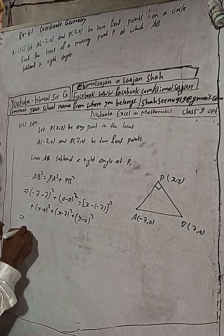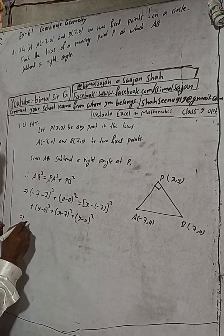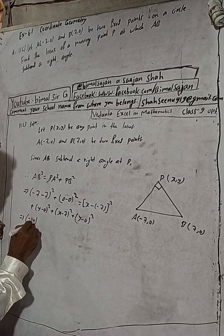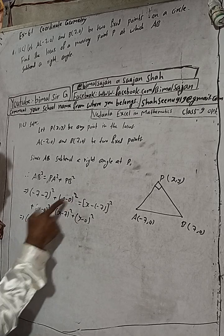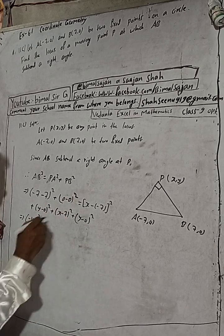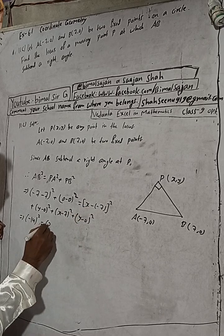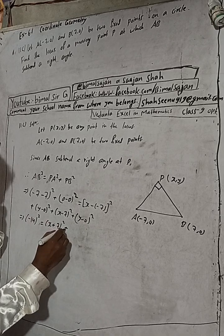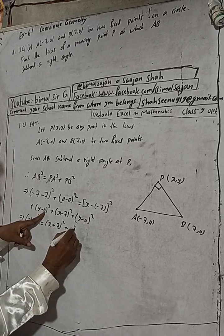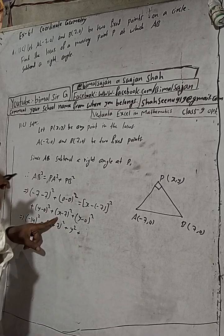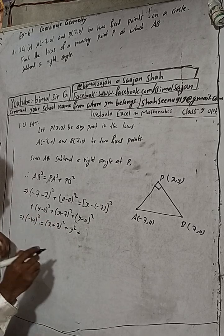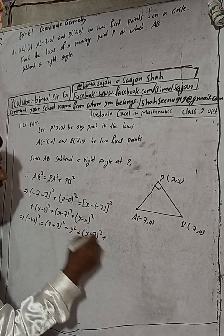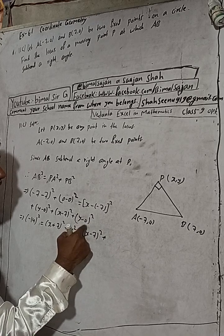Now, minus 7 minus 7 — both are minus — so this will be minus 14. So minus 14 whole square plus 0 equals the right side. For PA: x minus minus 7 becomes (x + 7) whole square, and y minus 0 is y, so y square. For PB: (x minus 7) whole square plus y square. So 14 squared is 196, and since it is minus squared it is plus, so 196 on the left side.